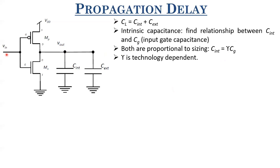We say that C_int = γ·CG; both are proportional to sizing - that's the common link between the two. γ is a technology-dependent parameter, typically close to one for sub-micron technologies. Now let us talk about C_x. C_x arises because of wiring capacitances due to interconnects, and also because of the CG of subsequent stages. We mentioned that this inverter would be driving some other logic. If this inverter is driving another inverter, then the load capacitance would be the input gate capacitance of the next inverter.